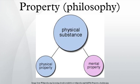In modern philosophy and mathematics, a property is a characteristic of an object. A red object is said to have the property of redness. The property may be considered a form of object in its own right, able to possess other properties. A property however differs from individual objects in that it may be instantiated, and often in more than one thing.